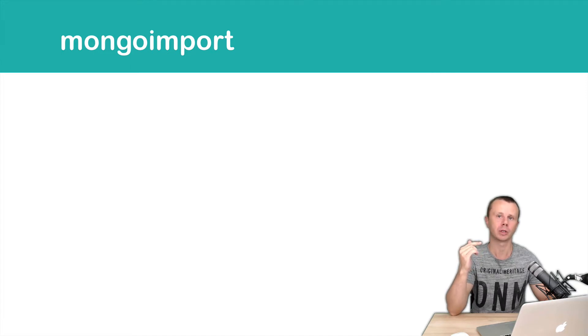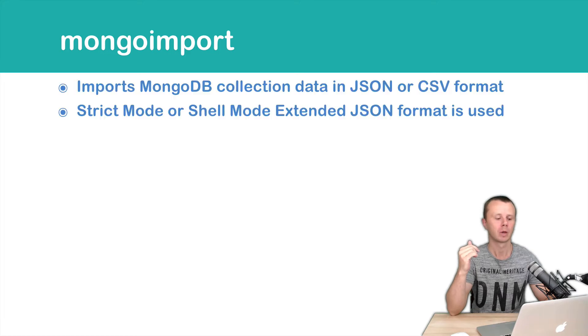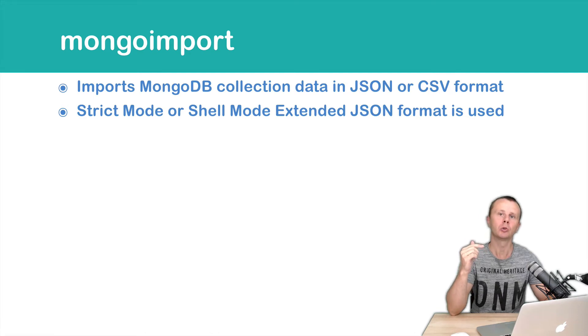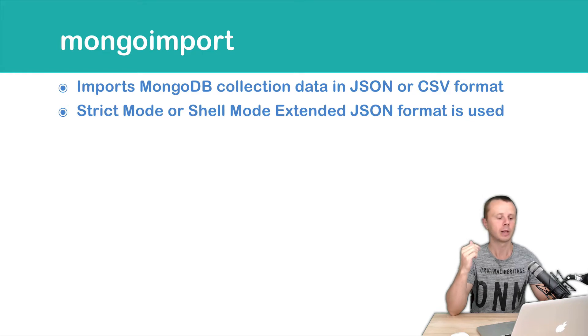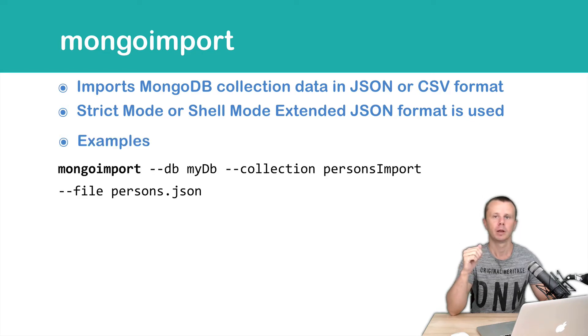The next utility is mongoimport. Using this utility you can easily import data into a MongoDB collection. If the collection is absent, it will be created automatically. You can import data in JSON or CSV formats. If you use JSON, you can use either extended JSON mode or shell mode syntax.